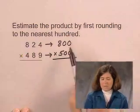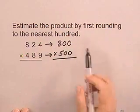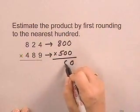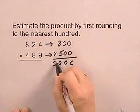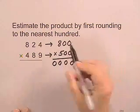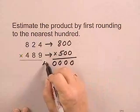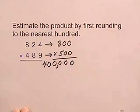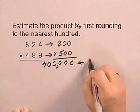Now we're multiplying 800 times 500. There are four zeros — two zeros in the first number, two zeros in the second number — and 8 times 5 is 40. So we have an estimated product of 400,000.